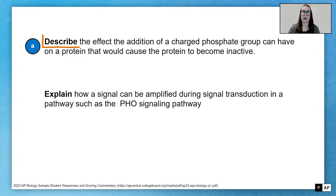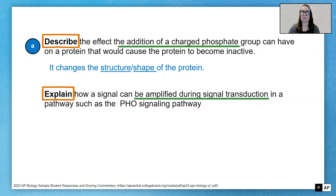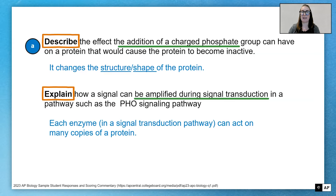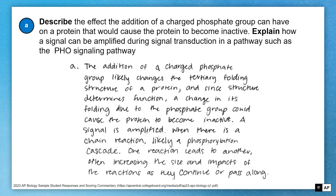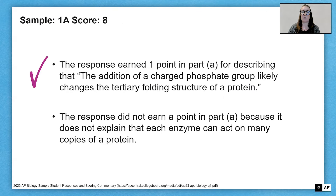In Part A, the question asks to describe the effect the addition of a charged phosphate group can have on a protein that would cause it to become inactive. The scoring guideline is looking for: it changes the structure or shape of the protein. Part A also asks to explain how a signal can be amplified during signal transduction in a pathway such as the PHO signaling pathway — specifically, that each enzyme in a signal transduction pathway can act on many copies of a protein. The student response correctly described the effect, noting that the charged phosphate group likely changes the tertiary folding structure of a protein, but did not fully address amplification, earning one point for the description only.